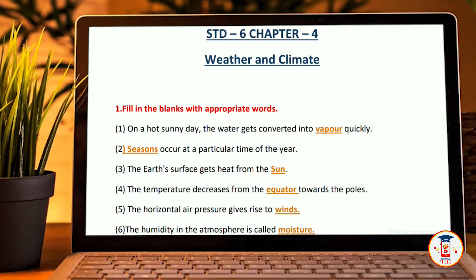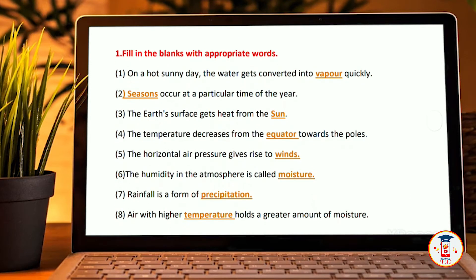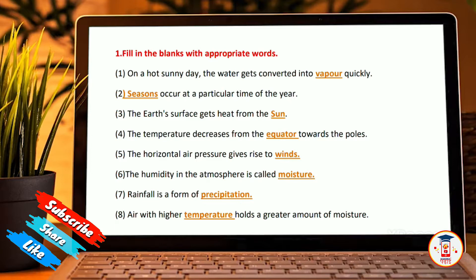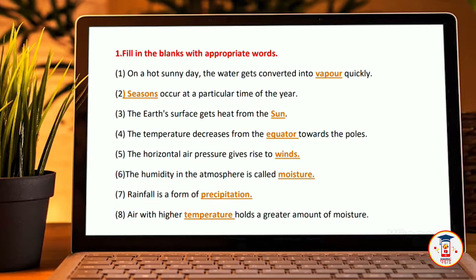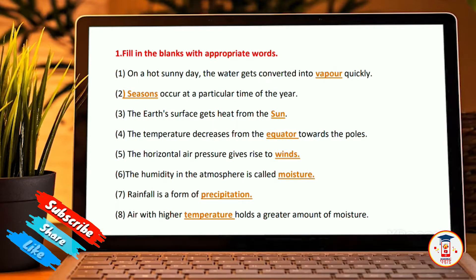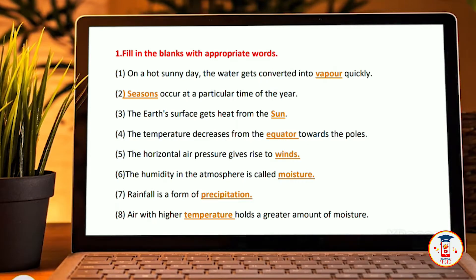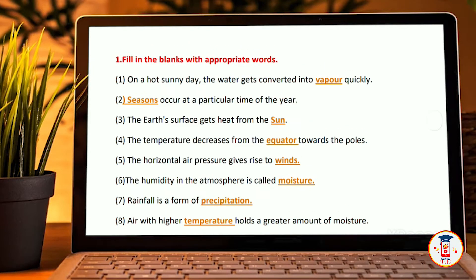The first section is fill in the blanks with appropriate words. On a hot sunny day, water gets converted into vapor quickly. Seasons occur at a particular time of year. The earth's surface gets heat from the sun. The temperature decreases from the equator towards the poles. The horizontal air pressure gives rise to winds. The humidity in the atmosphere is called moisture.